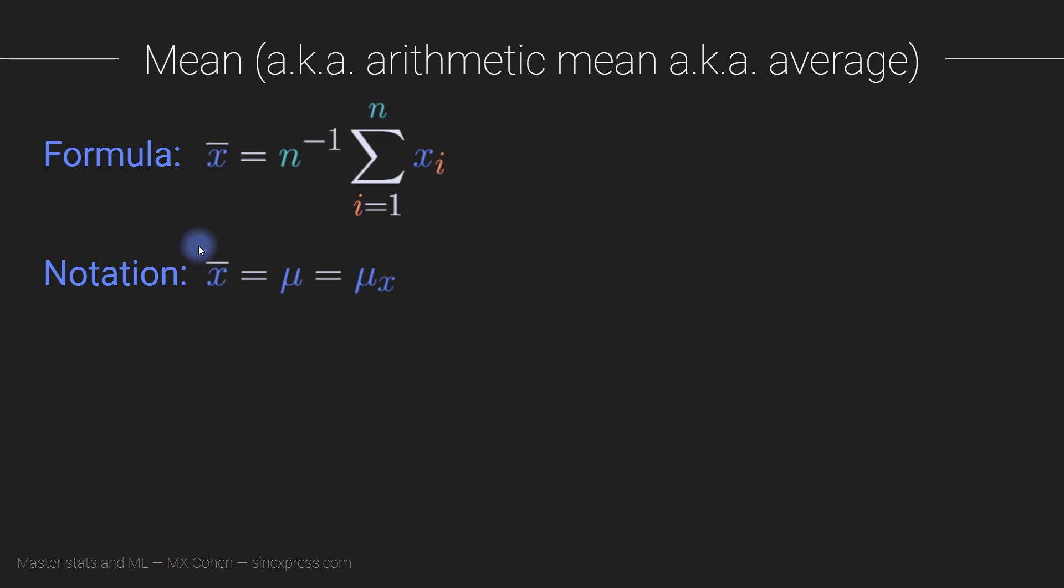The mean is often indicated using the Greek character mu, which looks like a u with an extra line to the left, or sometimes with a bar on top of the variable name. We would call this x bar, which is the average.